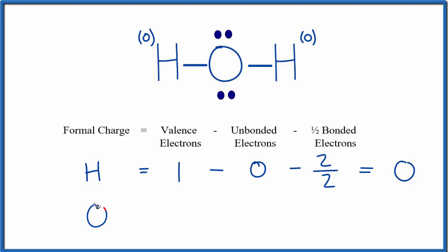For the oxygen, oxygen's in group 16, sometimes called 6A. It has 6 valence electrons. Unbonded electrons, it has 1, 2, 3, 4 unbonded valence electrons.